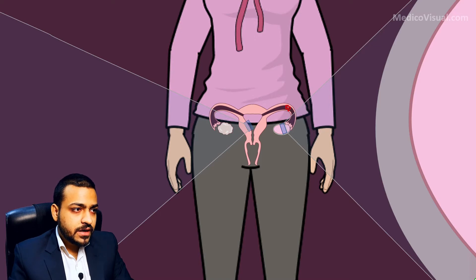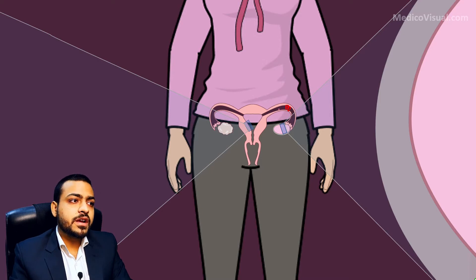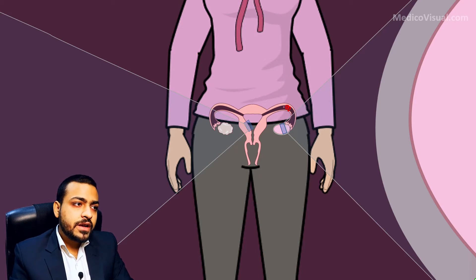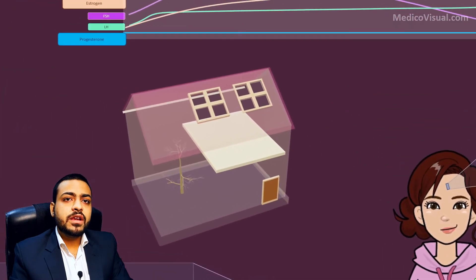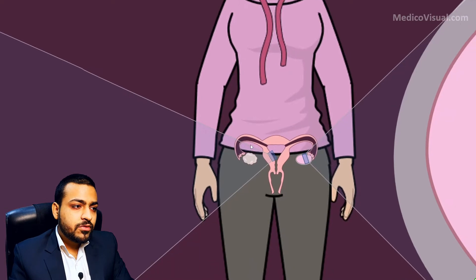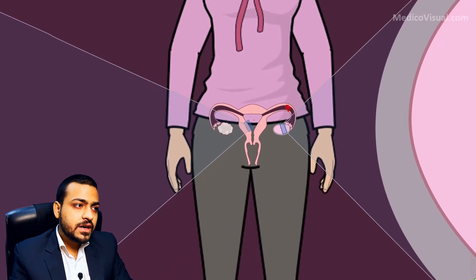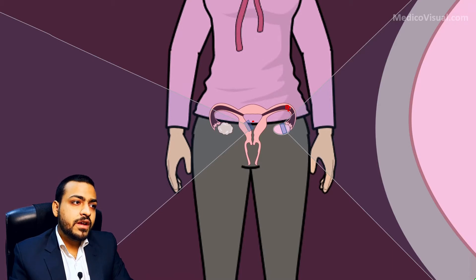If this secondary oocyte comes to the ampullary region of the uterine tube (fallopian tube), a sperm may come and fertilize it. From this point onward it will undergo a series of mitotic divisions or cleavage to ultimately form a blastocyst. It will ultimately travel all the way into the uterine cavity.